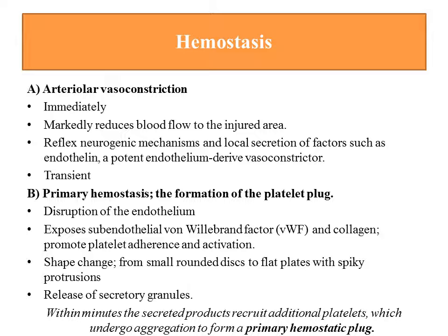What happens after trauma? Initially, there will be arteriolar vasoconstriction. This happens immediately and quickly reduces blood flow to the injured area. This is a reflex neurogenic mechanism. There is also secretion of local factors such as endothelin, which is a potent endothelium-derived vasoconstrictor. However, this is a transient, short-lived effect.